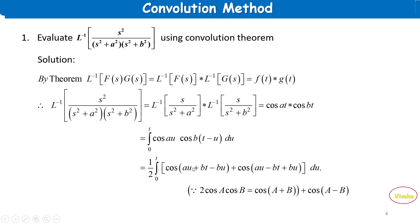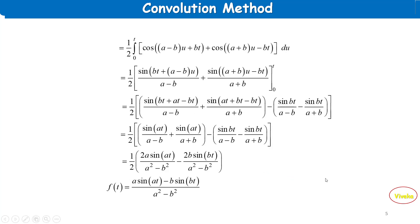So we get (1/2) integral from 0 to t of [ cos((a+b)u − bt) + cos((a−b)u + bt) ] du, after substituting a = au and b = b(t−u).